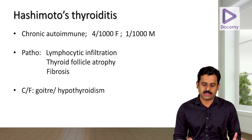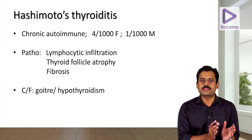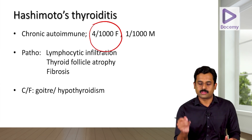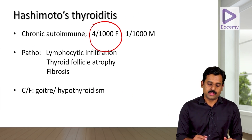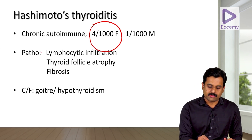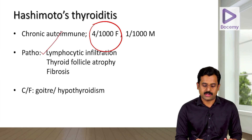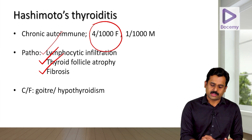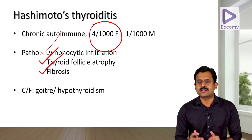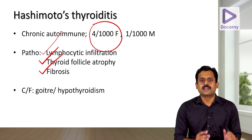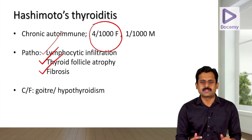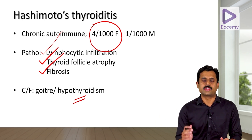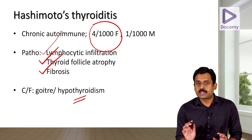Hashimoto's thyroiditis is the most common cause of thyroiditis and a chronic autoimmune thyroiditis, more common in females with a 4:1 ratio. The pathology involves lymphocytic infiltration of the thyroid gland, followed by thyroid follicular atrophy, and finally fibrosis. Clinically, as this is painless thyroiditis, you will typically notice a firm rubbery goiter or symptoms of hypothyroidism.